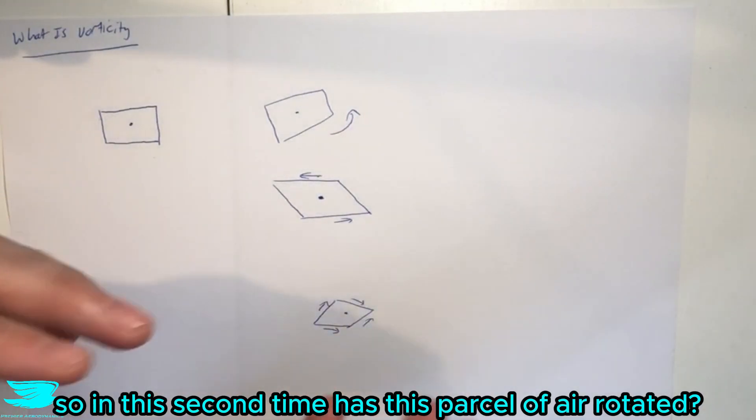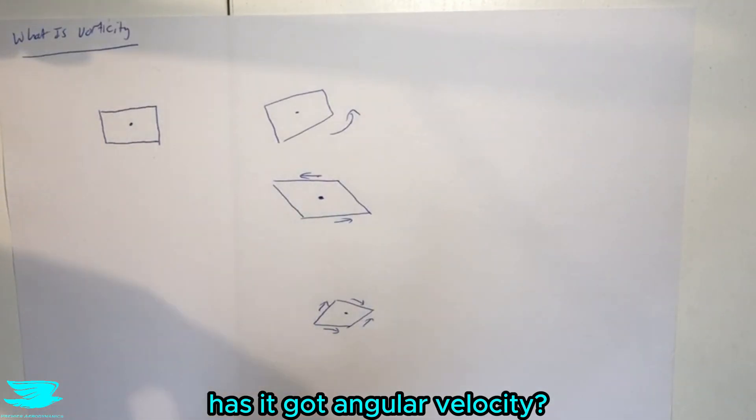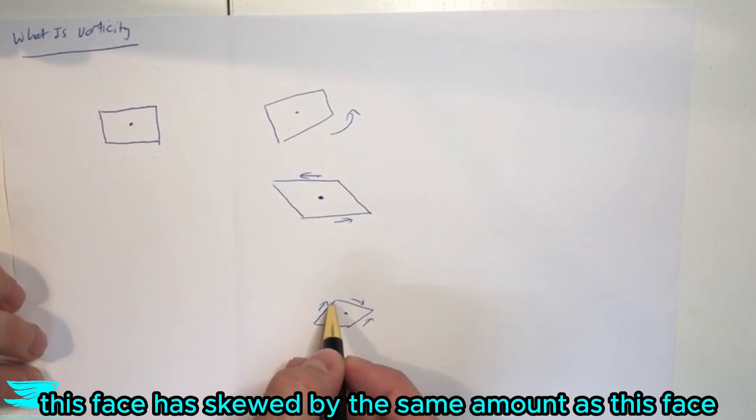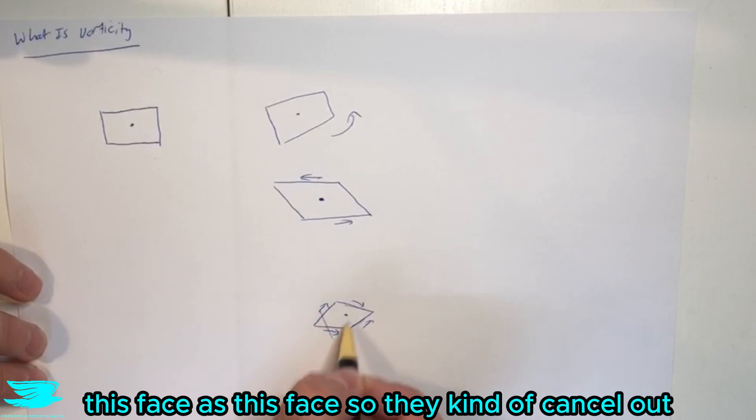So in this second time has this parcel of air rotated? Has it got angular velocity? Is there vorticity? Well actually no, because this face has skewed by the same amount as this face, this face as this face, so they kind of cancel out.